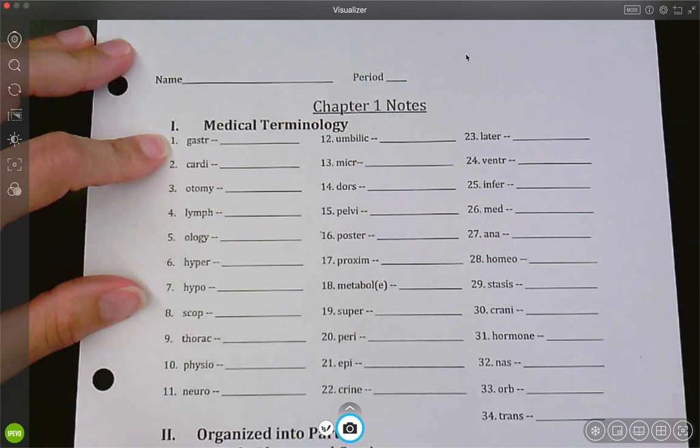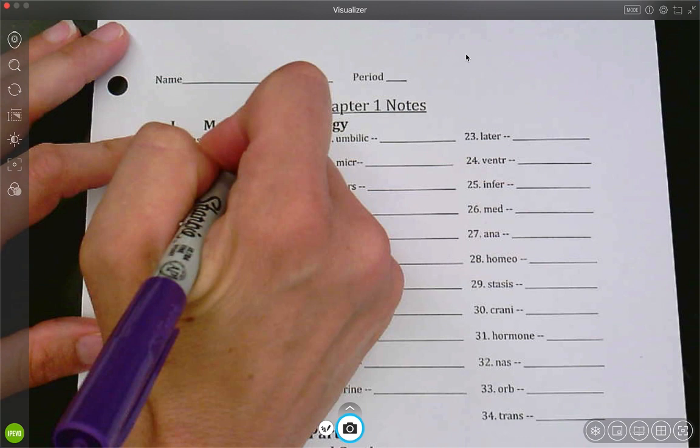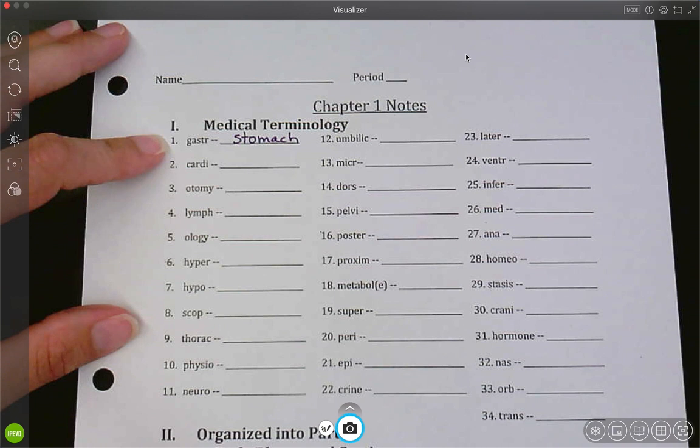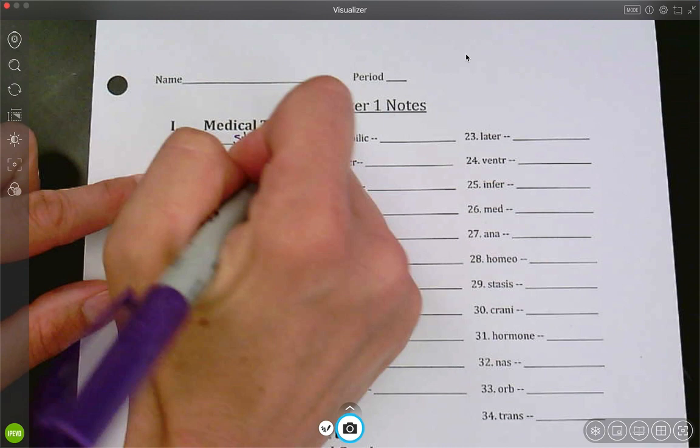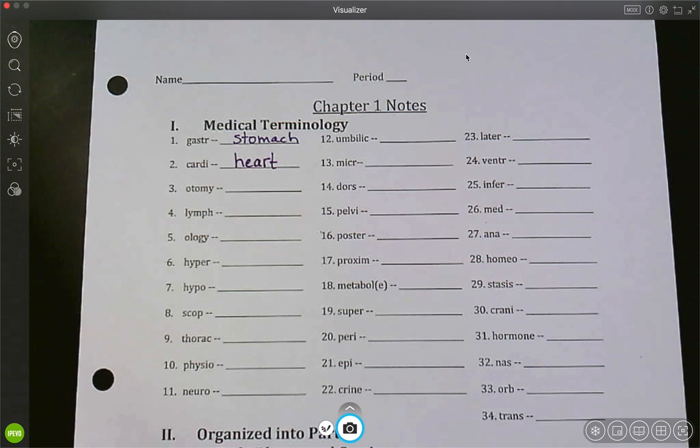So the first one is gastr. Gastr is stomach. Most of you have heard like gastric bypass surgery, where we're bypassing most of the stomach to help people lose weight. Cardi. Cardi is heart. So you've heard of a cardiac arrest, when somebody's heart stops, when we're doing CPR, a cardiologist, a doctor that studies the heart.